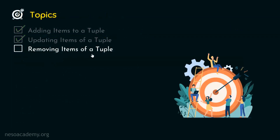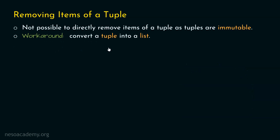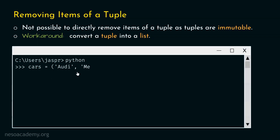Let's move on to the next topic: removing items of a tuple. We know it is not directly possible to remove items of a tuple, as tuples are immutable. But we can convert a tuple into a list, then remove the item we want, and then convert that list back to a tuple. Let's consider the same cars example and first convert this tuple to a list: temp = list(cars).